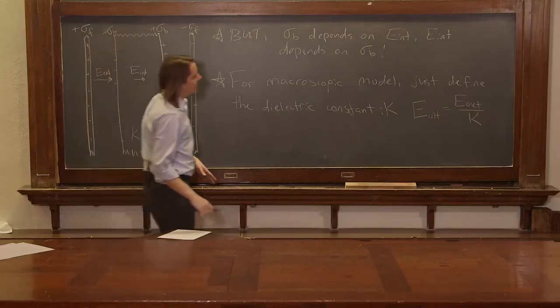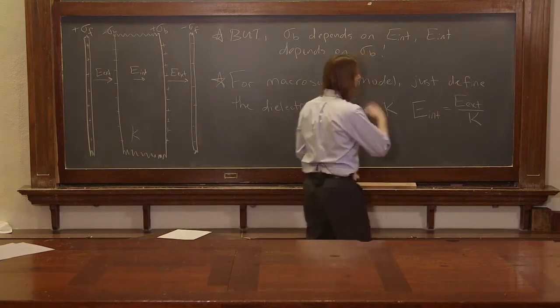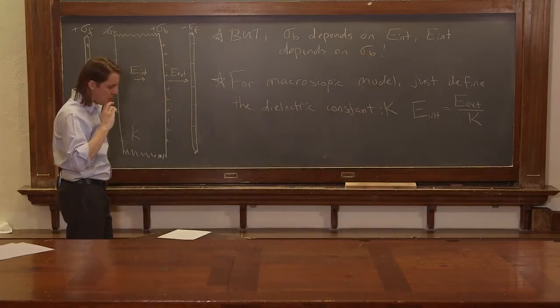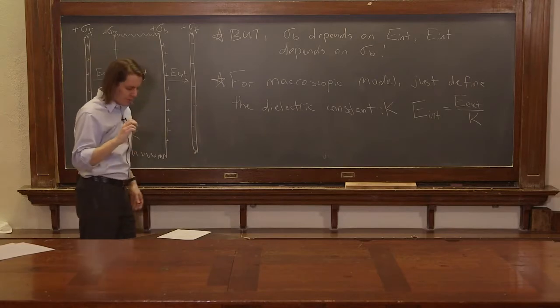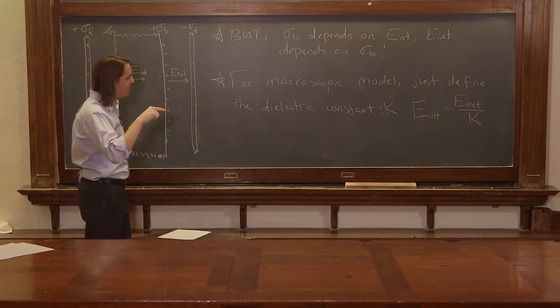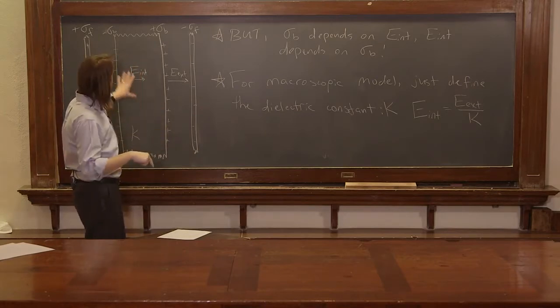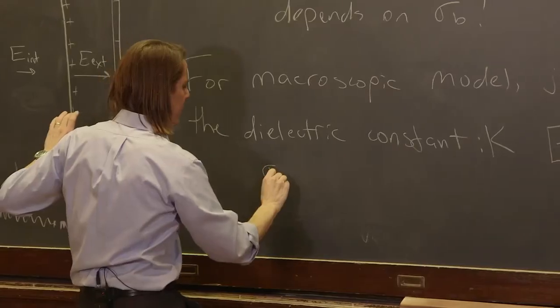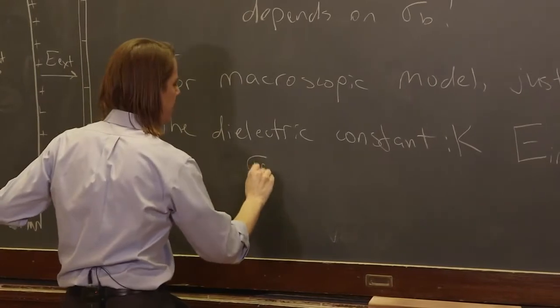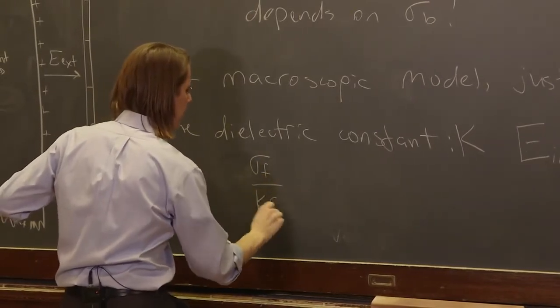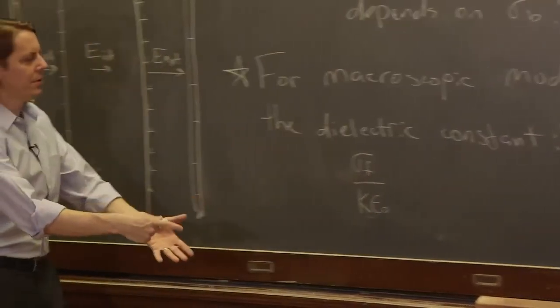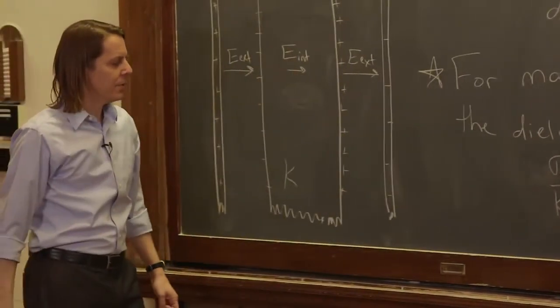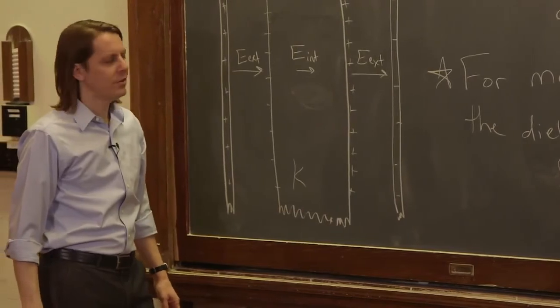So if you have that, then you can go back to our former equation. So we could say, in that case, then, before we had sigma_free. We could say that E_internal, which we now know is sigma, is the free charge density over K epsilon_naught. E_external is sigma_free over epsilon_naught. We're just dividing it by the dielectric constant.